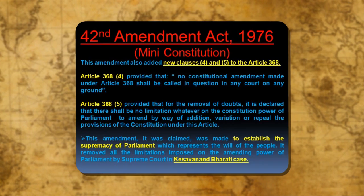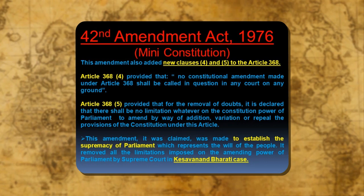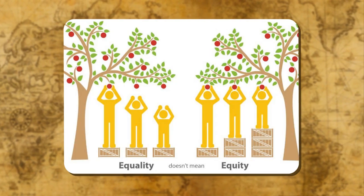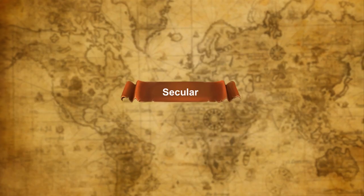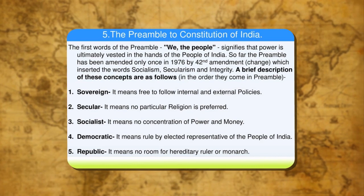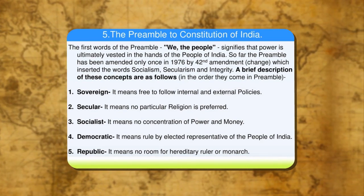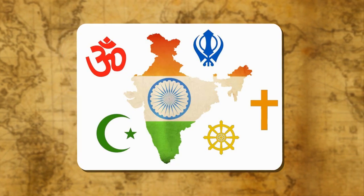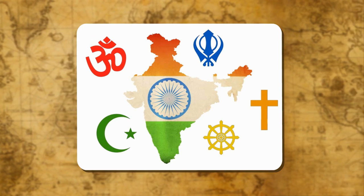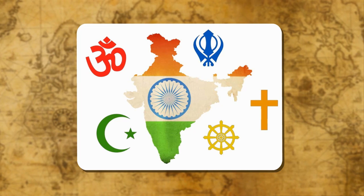The word socialist was added to the preamble by the 42nd Amendment Act of 1976. It implies social and economic equality for all its citizens. The word secular was also inserted into the preamble by the 42nd Amendment Act of 1976. It implies equality of all religions and religious tolerance. India does not have any official state religion and treats all religions with equal respect.